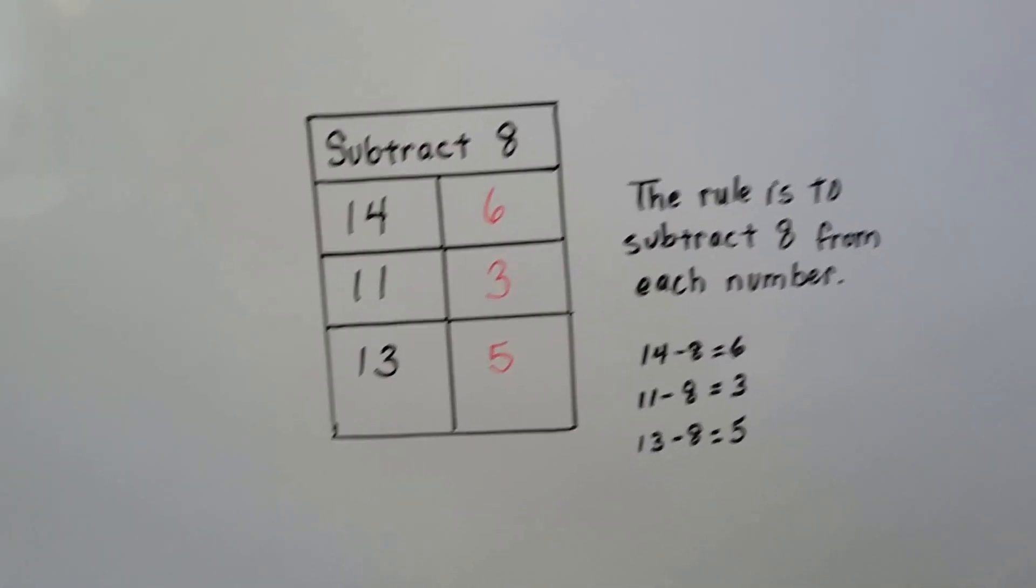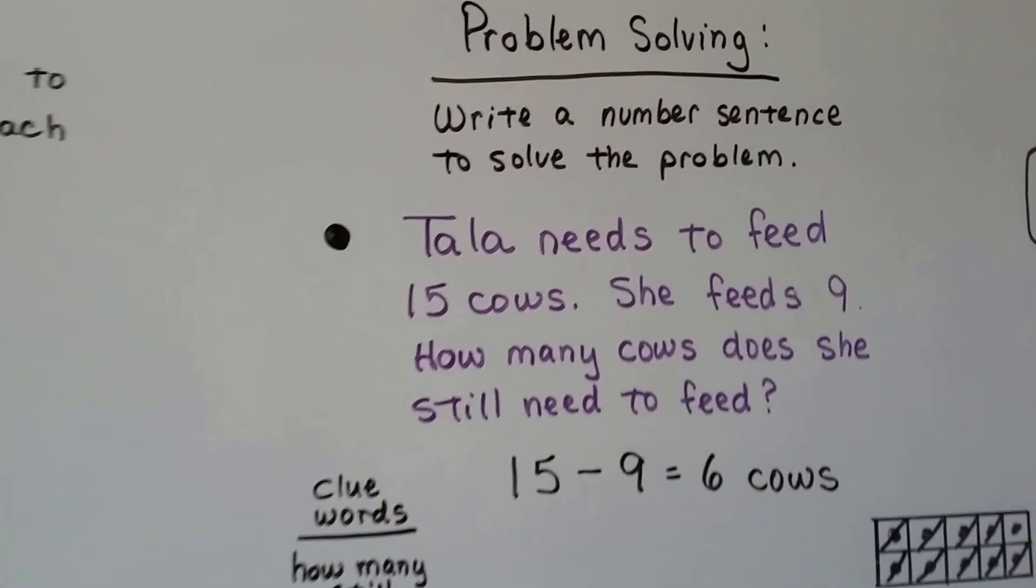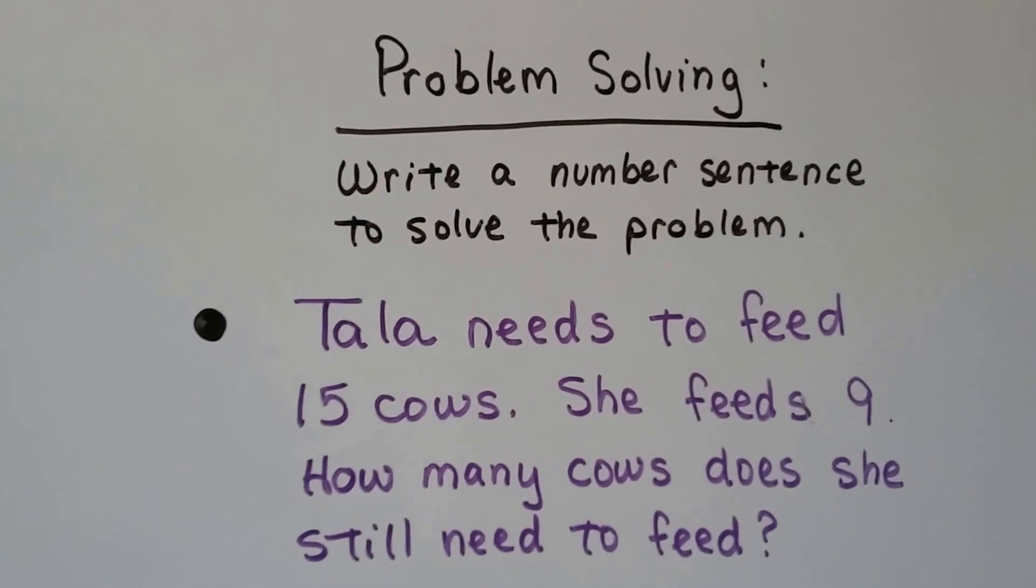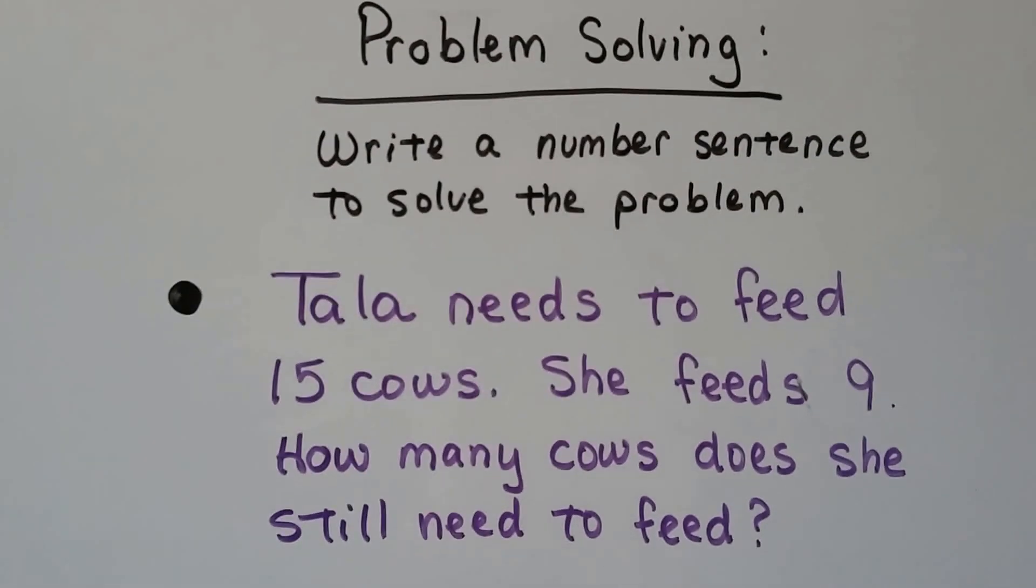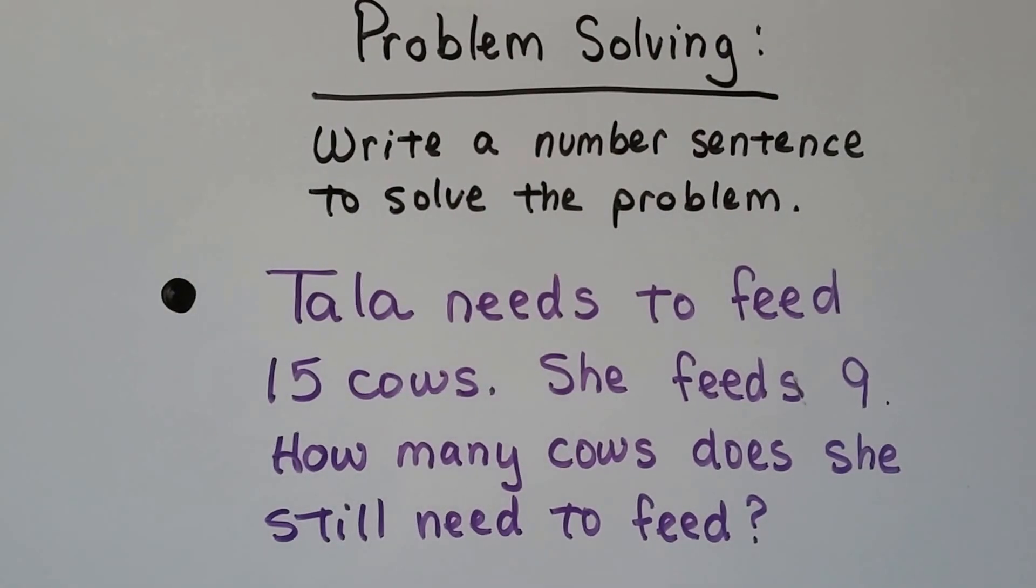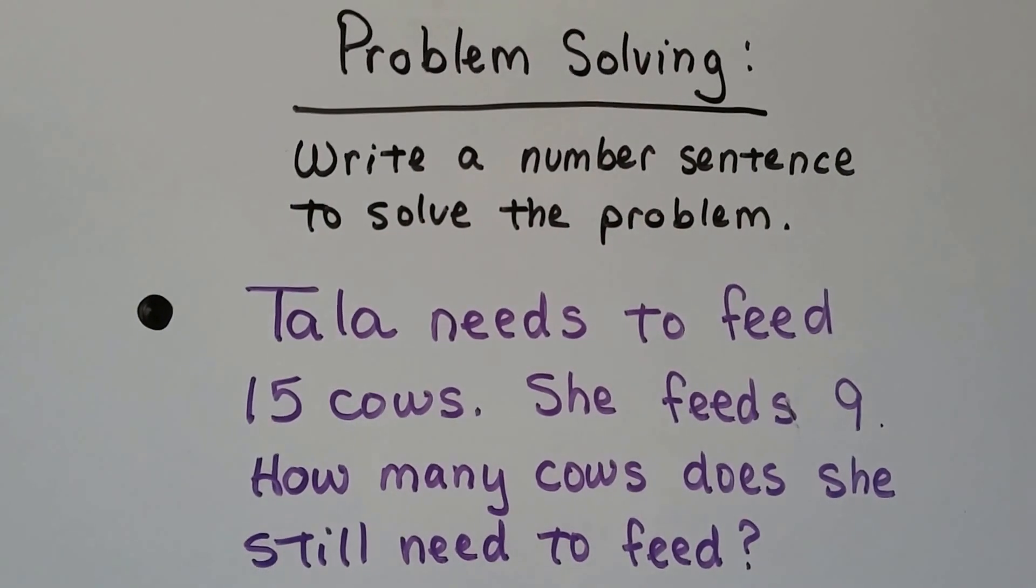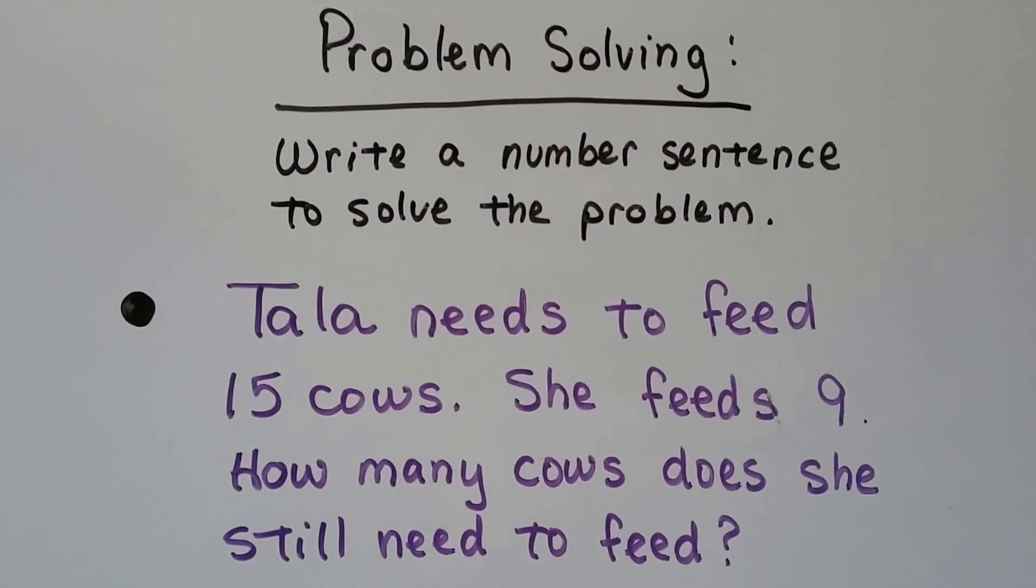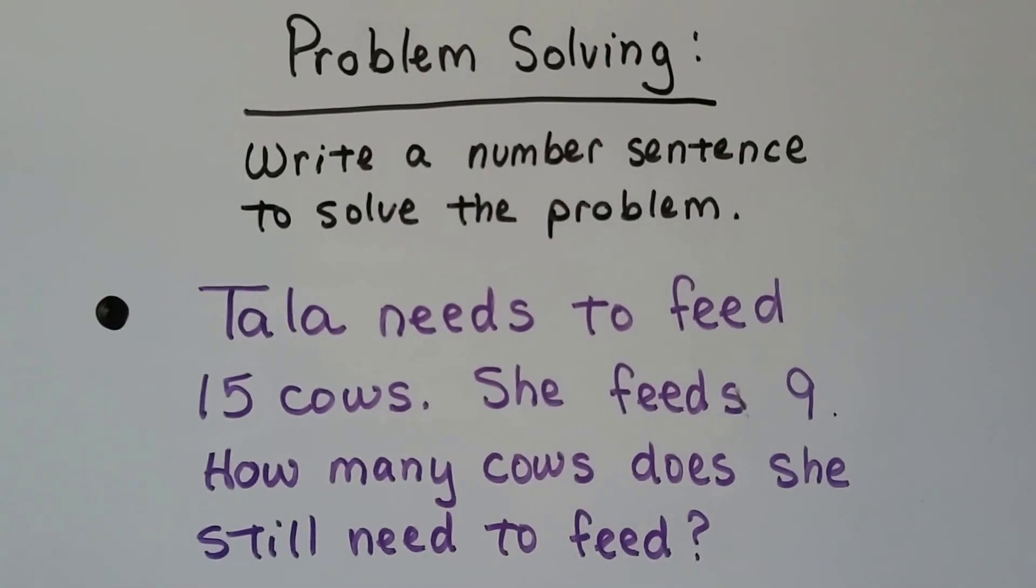Let's try some problem solving. We need to write a number sentence to solve the problem. Tala needs to feed 15 cows. She feeds 9. How many cows does she still need to feed? Is this going to be an addition sentence or a subtraction sentence?